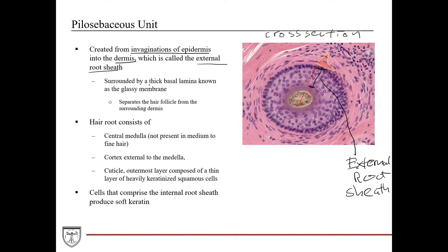The external root sheath is surrounded by a thick basal lamina, called the glassy membrane because it has this thick glassy-type appearance. As you'll notice in the slide, it actually separates the hair follicle from the surrounding dermis. The connective tissue you see here is the surrounding dermis layer, and then the glassy membrane separates the hair follicle from it.